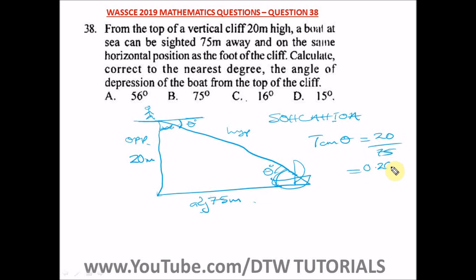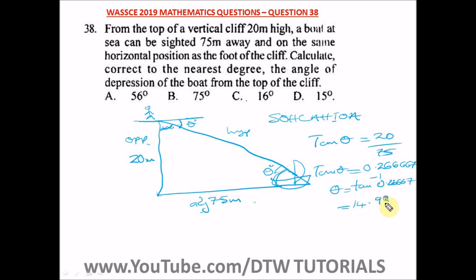20 divided by 75 gives 0.26667, so tan θ = 0.26667. Therefore, θ = tan⁻¹(0.26667) = 14.931°. The question says correct to the nearest degree, and since we have a 9 after the decimal, we round up: θ = 15 degrees. The answer is option D.